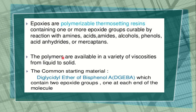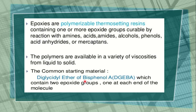The polymers are available in a variety of viscosities, from liquid to solid. The common starting material is diglycidyl ether of bisphenol A (DGEBA), which contains two epoxide groups, one at each end of the molecule. It is the common starting material for the preparation of epoxides.